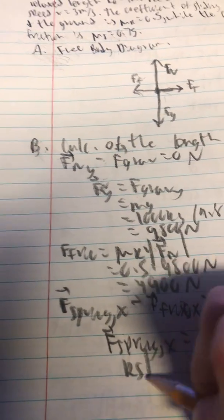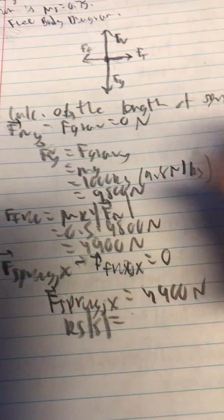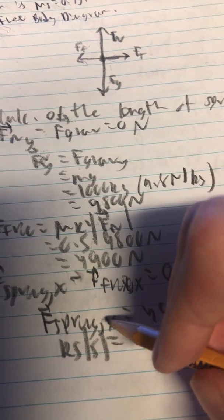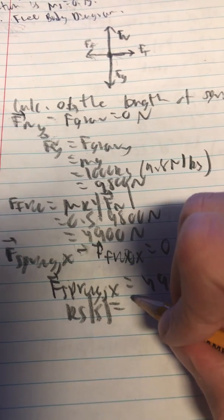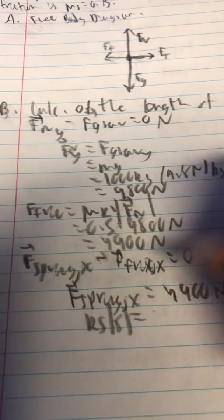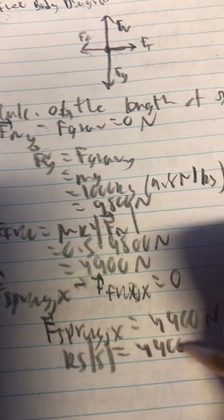So K times s should be equal to, since the force of the spring is only in the x direction, should be equal to 4900 newtons.